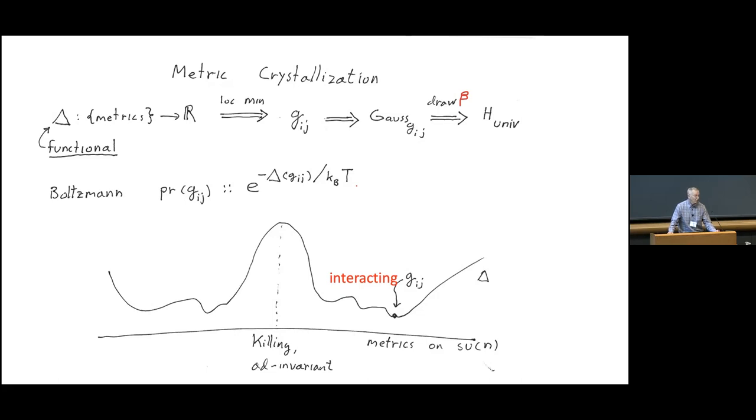Once you have the metric, you can produce a probability distribution, which is the Gaussian I had on the previous screen. And then you know what it means to take a random, given the temperature beta, given that probability distribution, that tells you what it means to take a random Hamiltonian. And our point of view philosophically is maybe that's the initial conditions for the universe. Some symmetry breaking at the start.